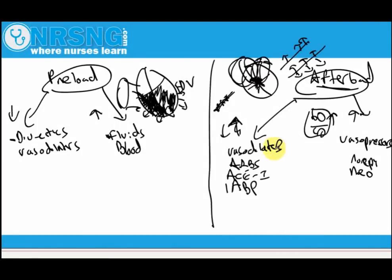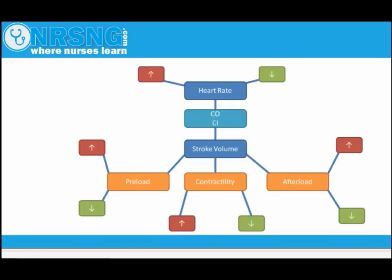Looking at the chart we went over: heart rate affects cardiac output and cardiac index. Stroke volume — the volume per beat — is affected by preload, contractility, and afterload. There are various therapies to increase or decrease each of these aspects, and by manipulating those variables we can affect the other parameters. That's a basic introduction to hemodynamics.